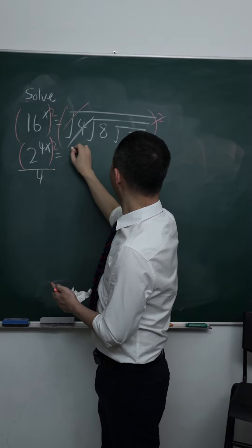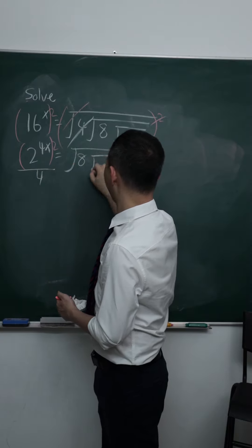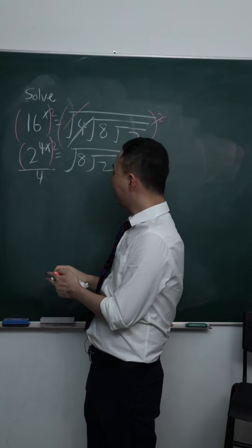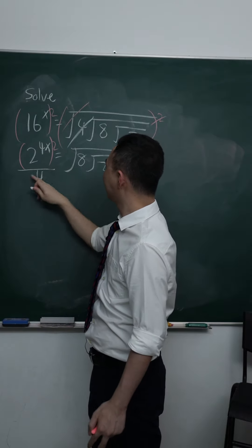Then this one, gone. I only have left square root of 8, square root of 2. So here is 2 power of 2x divided by 4.